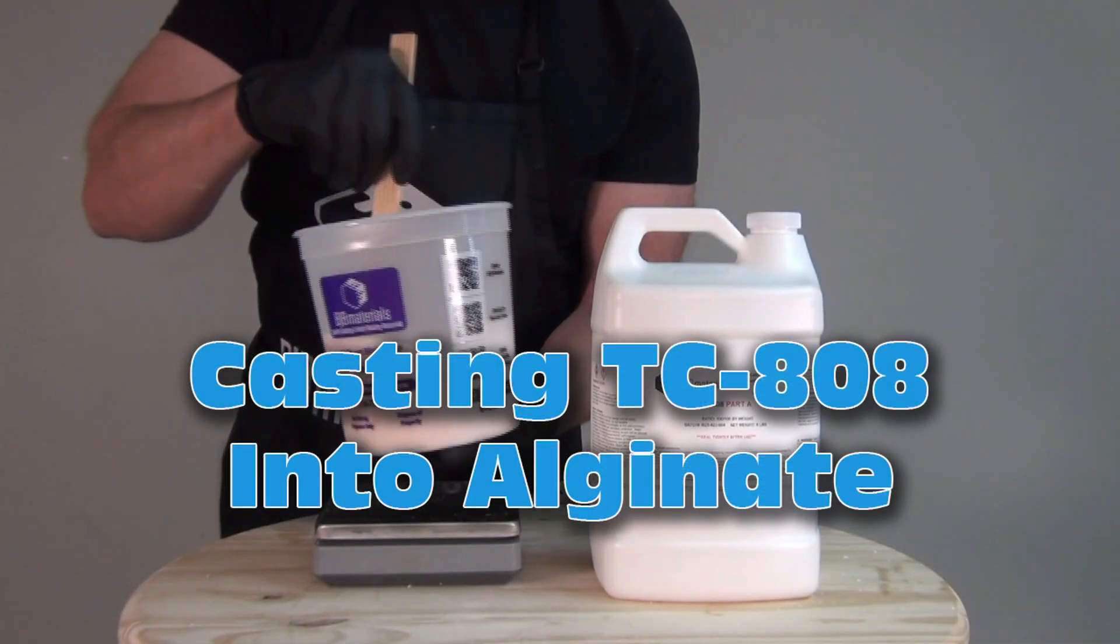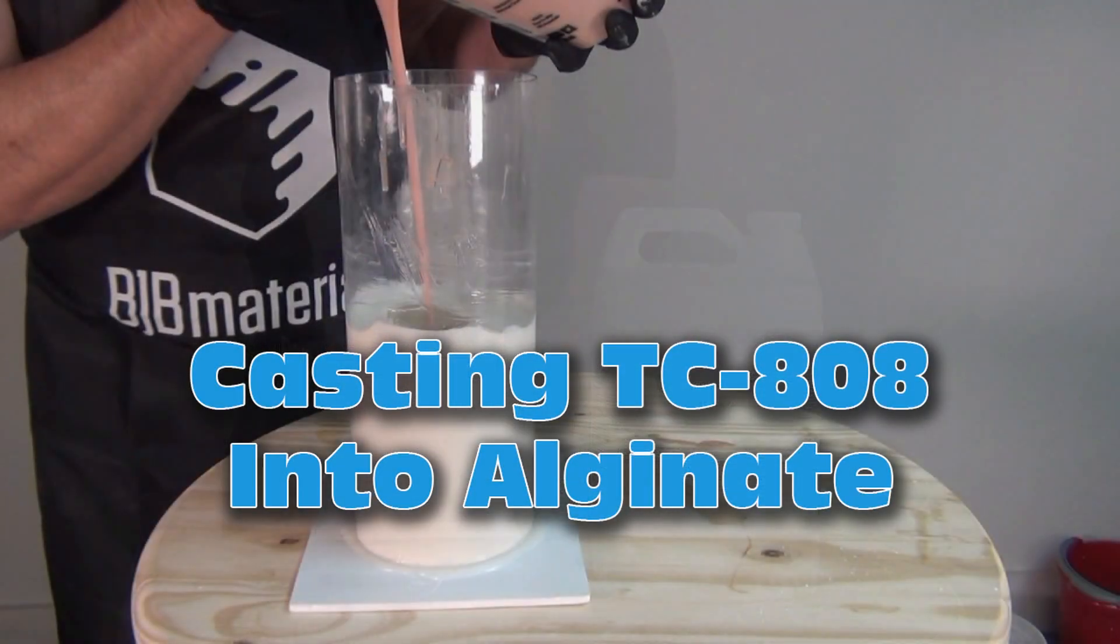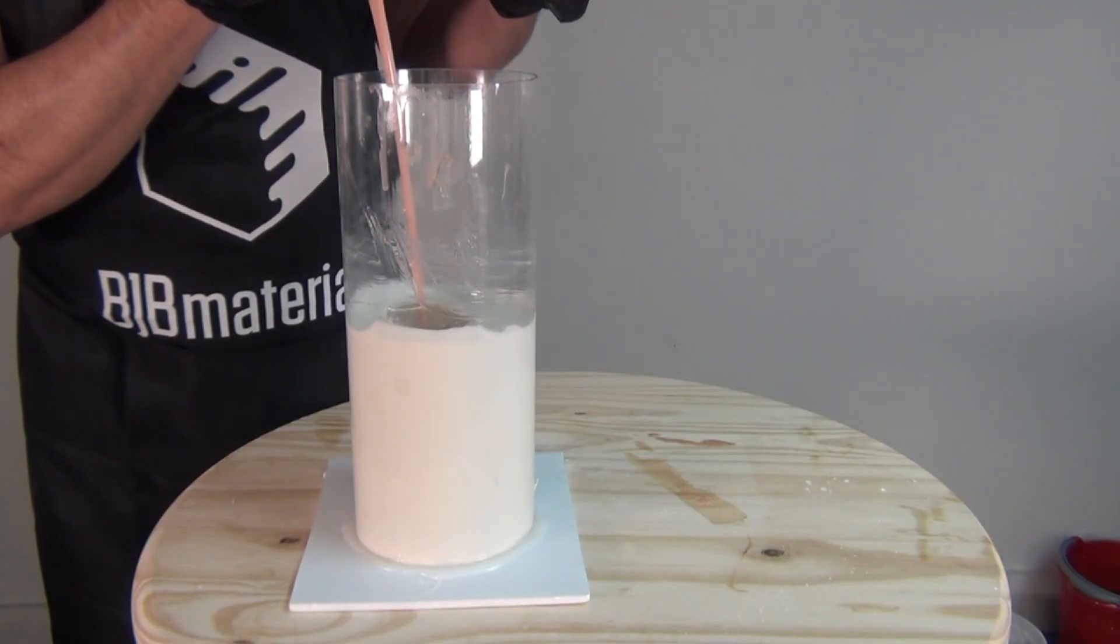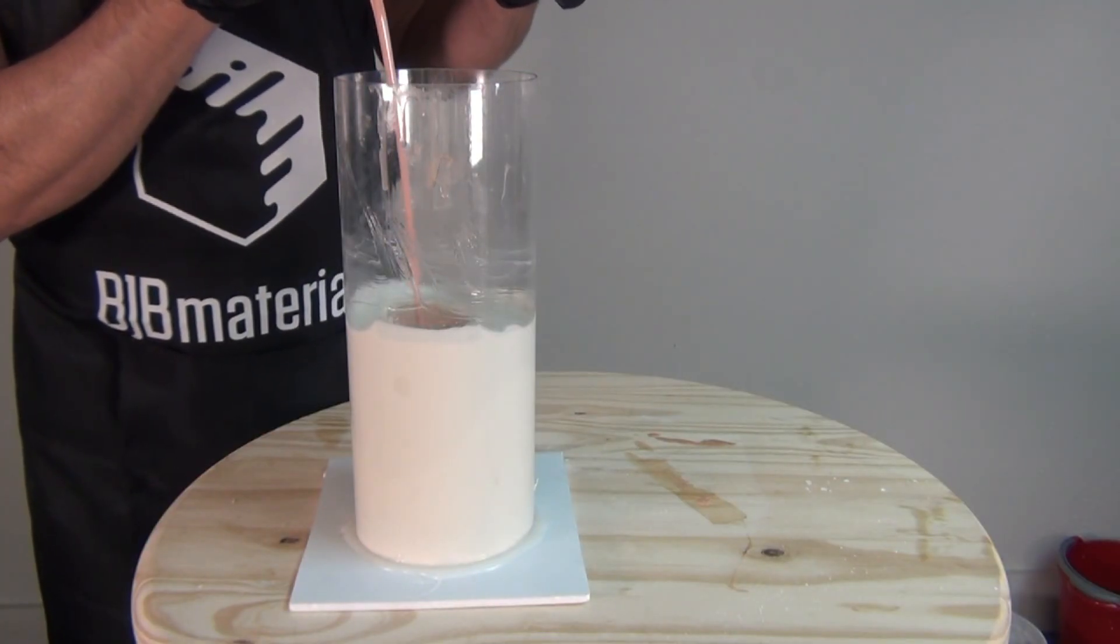Casting TC-808 polyurethane resin into an alginate mold. In this tutorial, I'm going to be covering the process of pouring a polyurethane resin into an alginate mold.